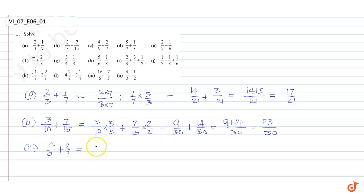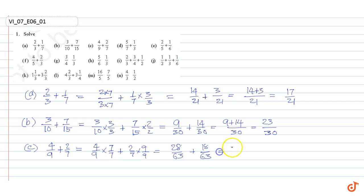Part c: 4/9 plus 2/7. Taking LCM as 63, we get 4/9 into 7/7 plus 2/7 into 9/9, equal to 28/63 plus 18/63, equal to 28 plus 18 divided by 63, equal to 46/63.